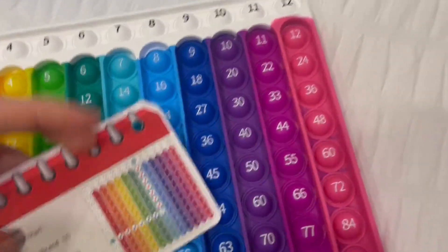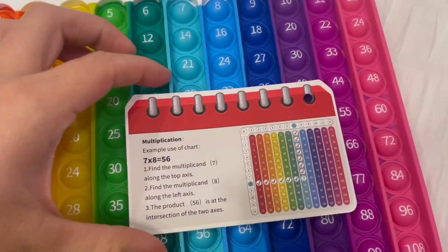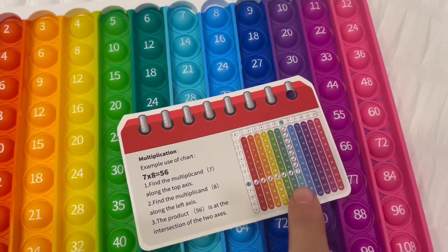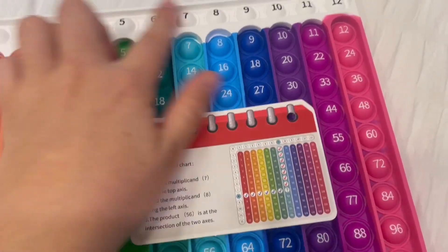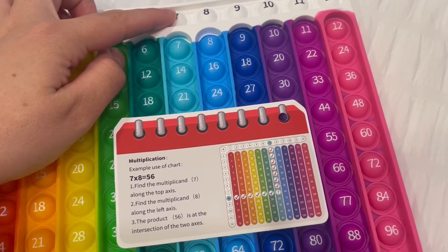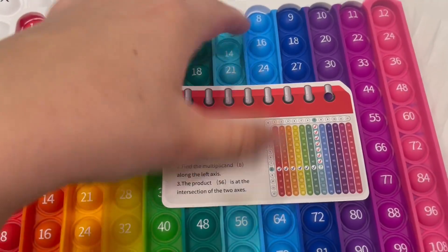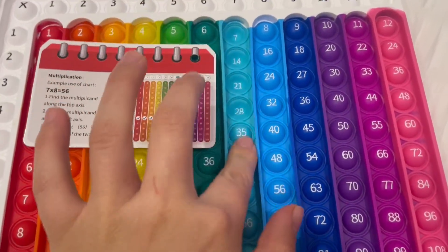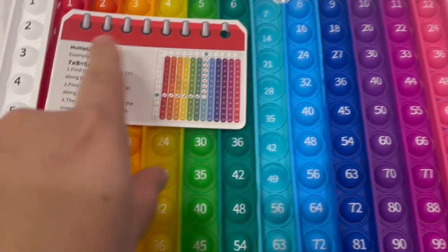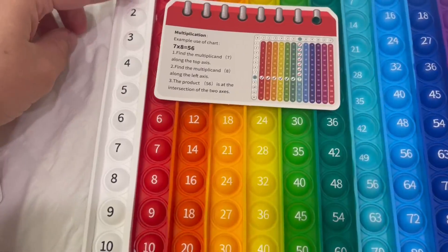And then here's another way of how to do it with multiplication. So it shows you how to do it with multiples. So you go to number seven. Okay and then you go seven down. So one, two, three, four, five, six, seven.